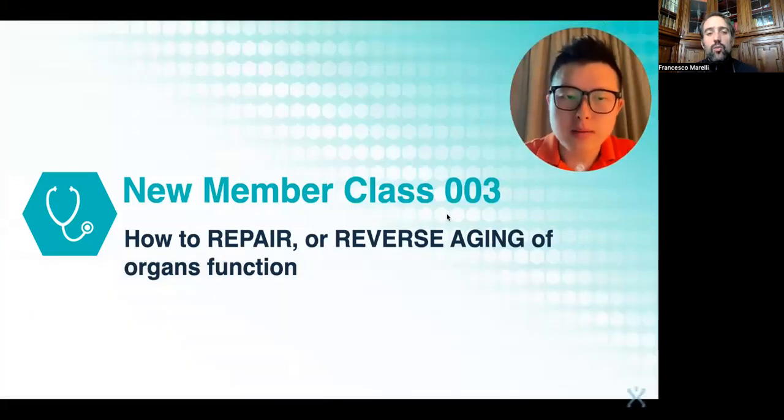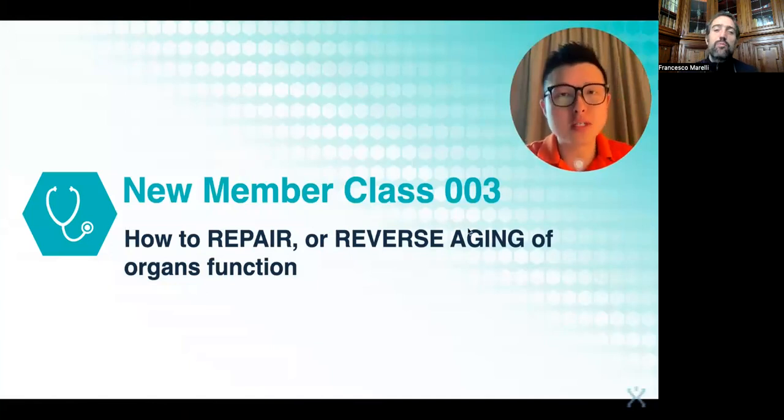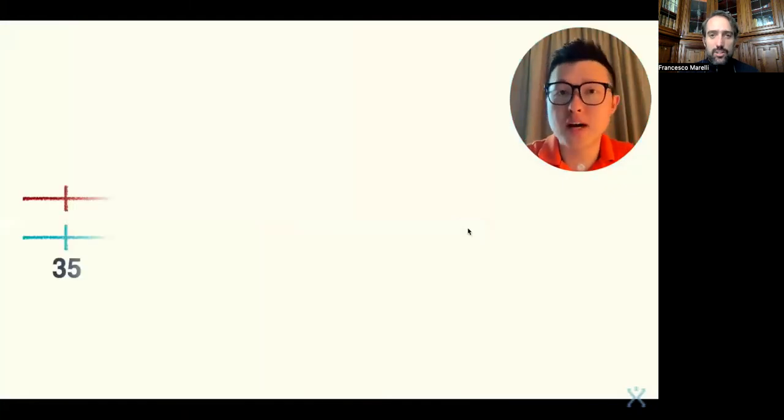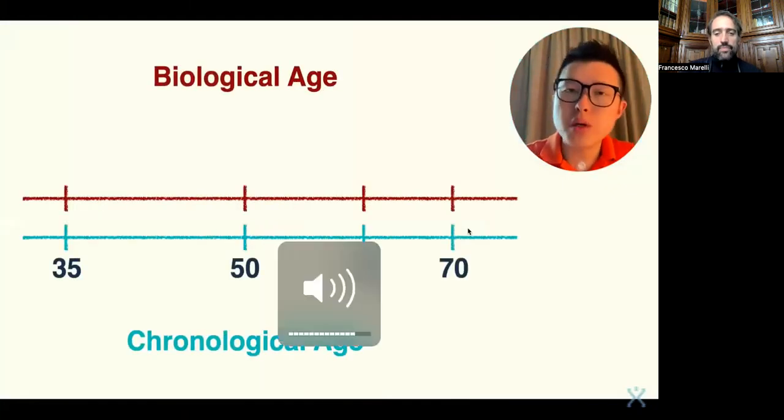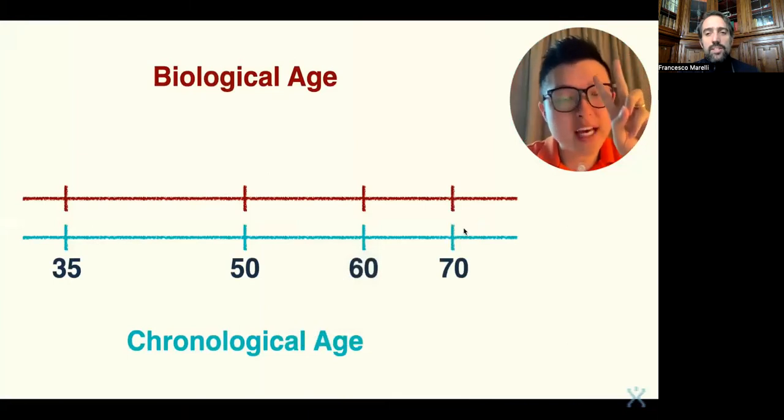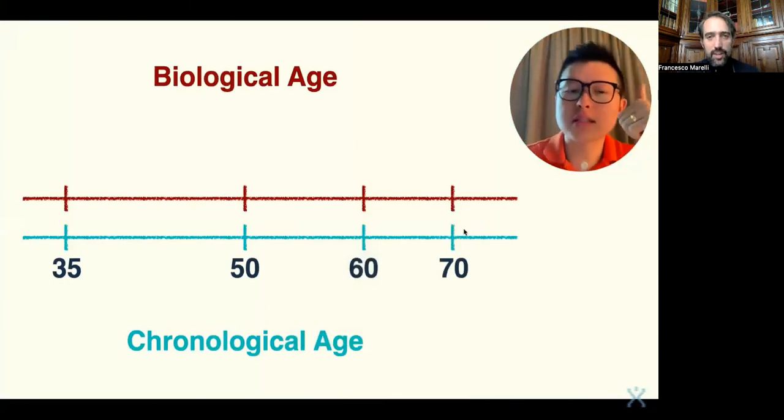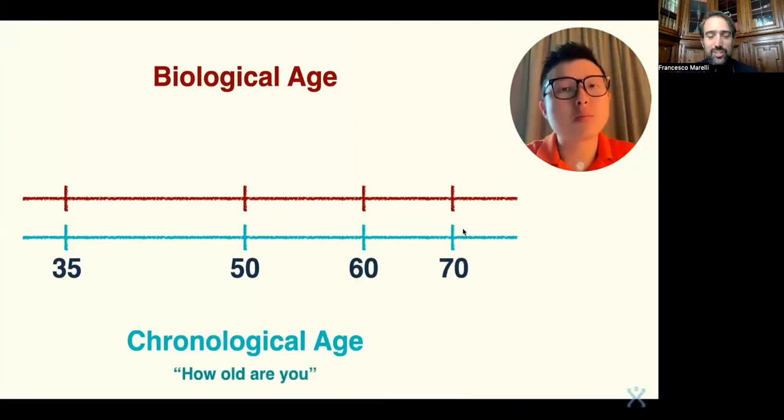Today we'll be talking about how to repair or even reverse aging of the internal organ function. So every one of us has two types of age. You might have heard of this. One is chronological age and number two is biological age.